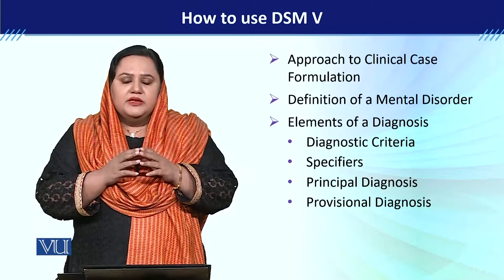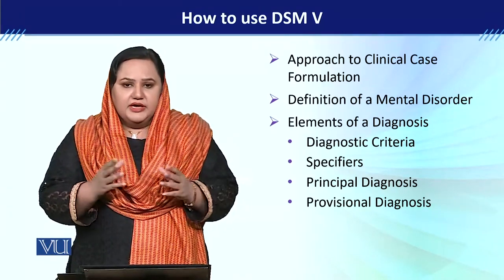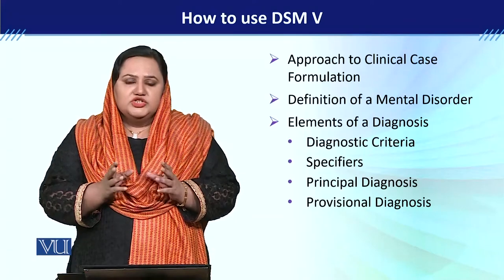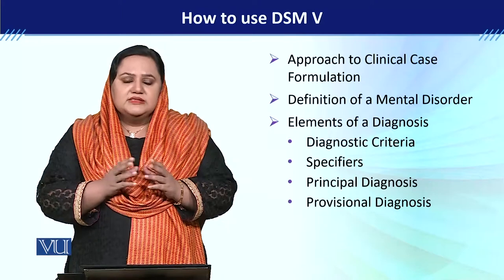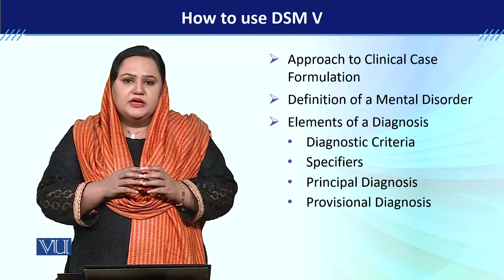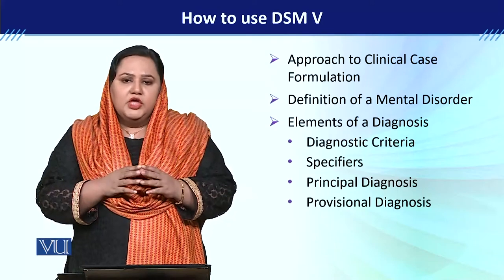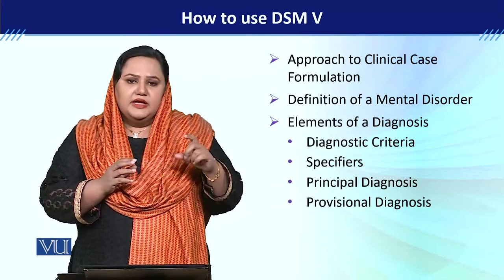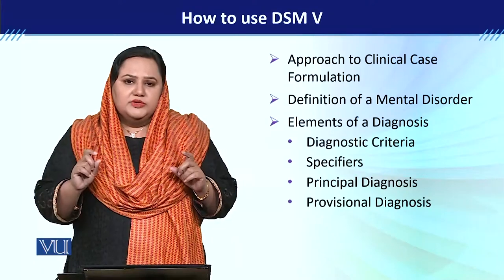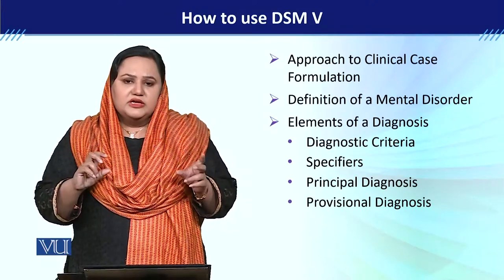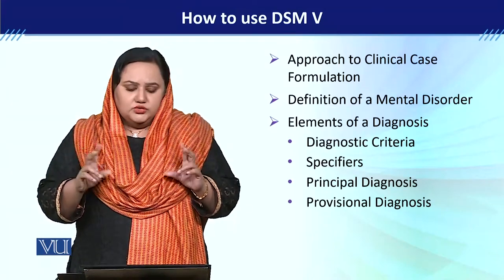We also need to specify the course — whether the remission is partial or full. Additionally, we need to explain the intensity: whether it is mild, moderate, or severe. All these things must be mentioned along with a diagnosis. However, keep in mind that not all three types of specifiers apply to every disorder — some have them and some do not.